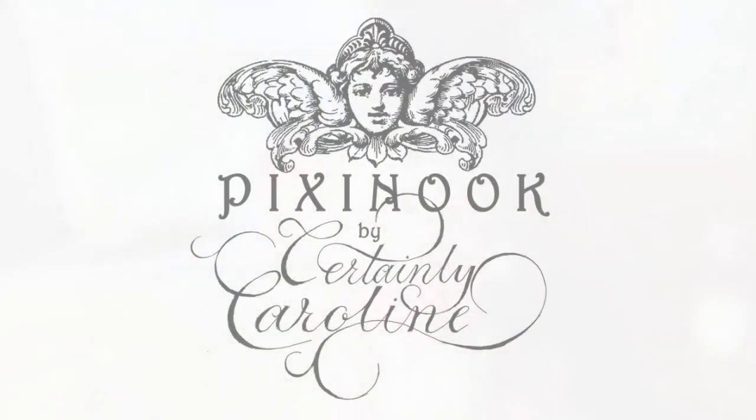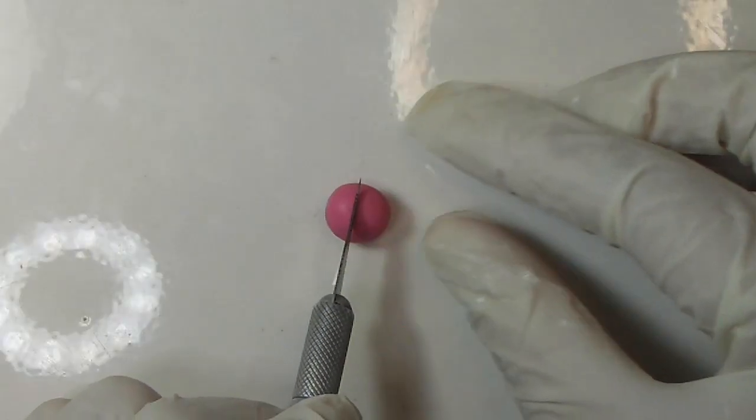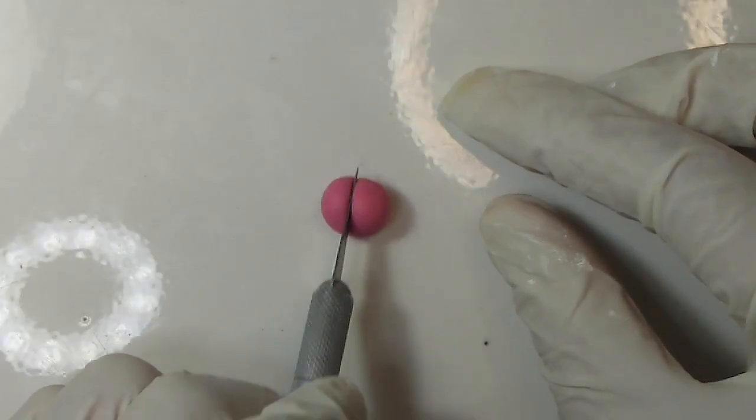Welcome to Pixie Nook by Certainly Caroline. Take a small piece of clay and roll it out using your hands to form a tiny ball. Cut the ball in half and create an egg-like shape.